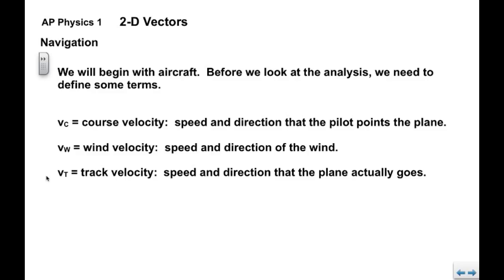We have the course velocity, which is V sub C. This is the speed and direction in which the pilot points the plane. We have V sub W, which is the wind velocity, again speed and direction of the wind.